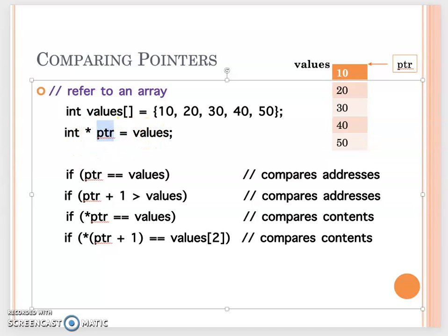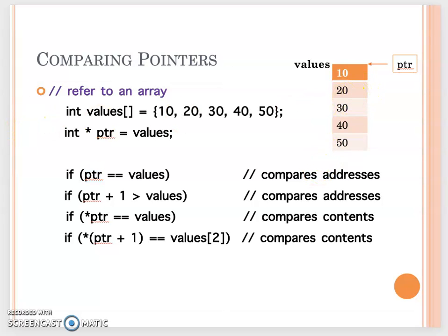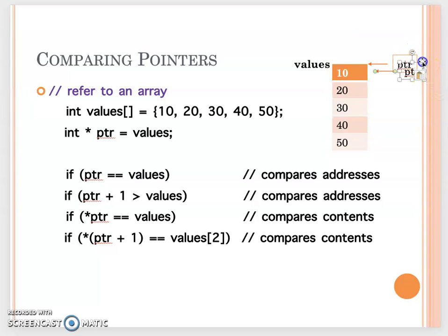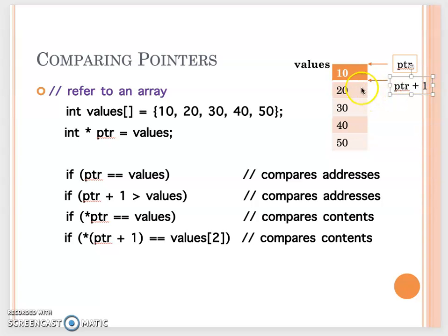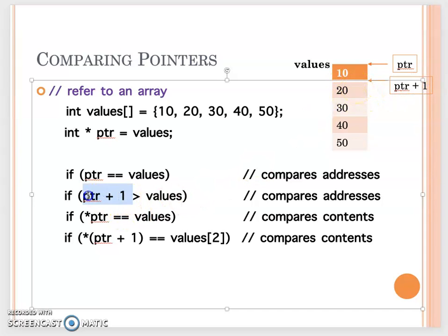If we only have the pointer variable itself, that's the memory address. So we compare it with the array name because the array name refers to the address. We can also do pointer arithmetic — we can add one to the pointer variable. If ptr refers to the beginning of the array, then ptr plus one refers to the next element. When we do arithmetic on a pointer, it automatically uses the pointer's data type, so plus one adds four bytes, referring to the next integer value. They are still comparing addresses.